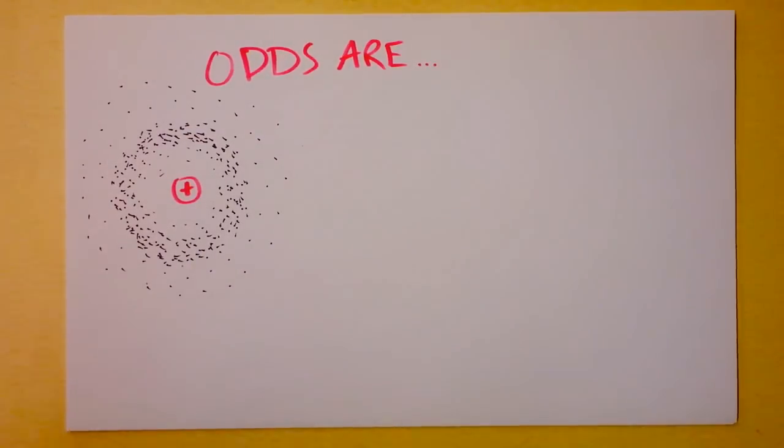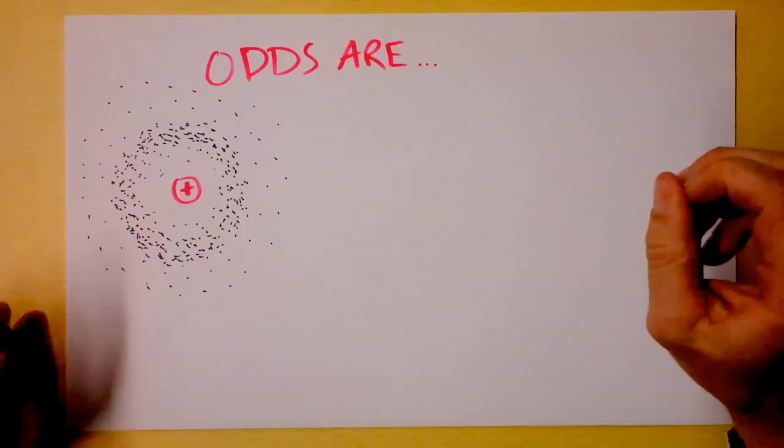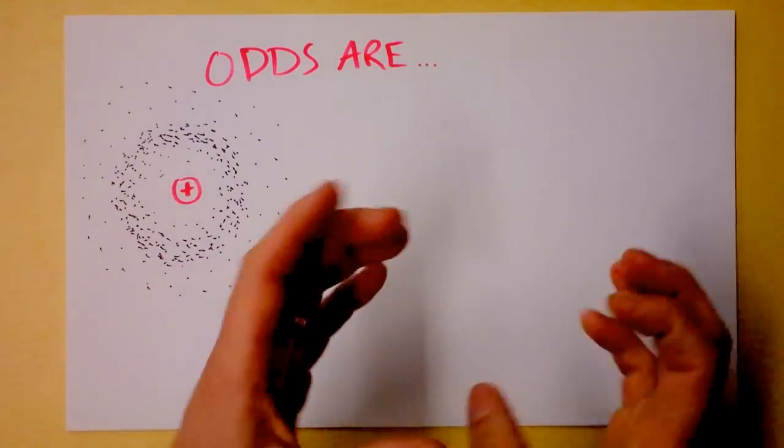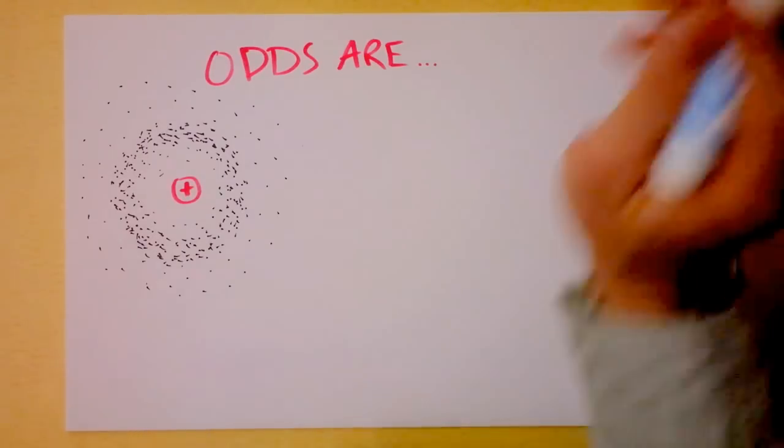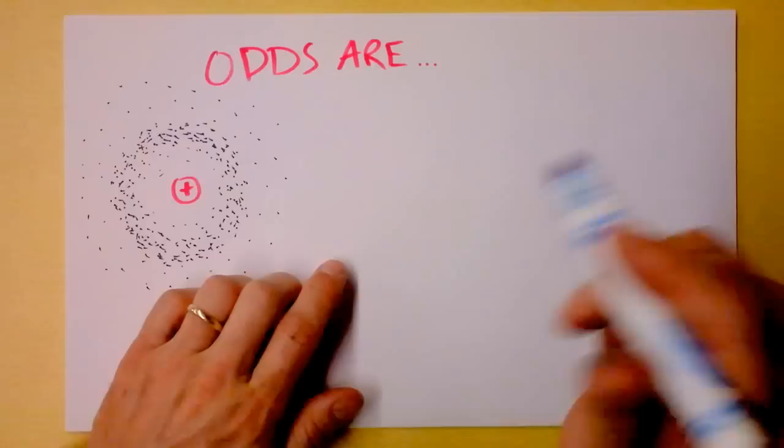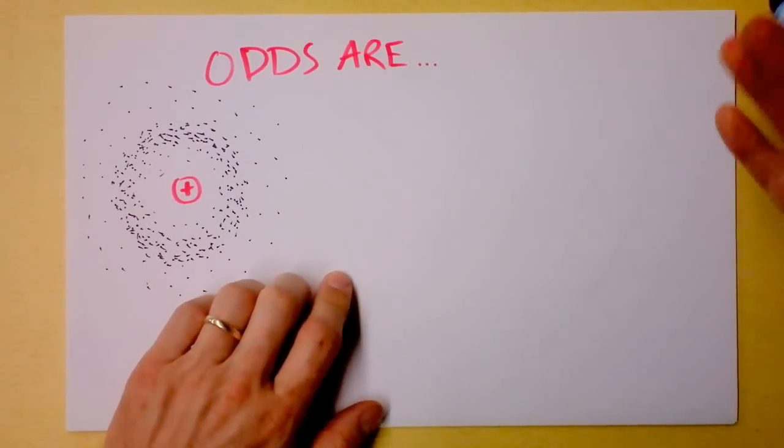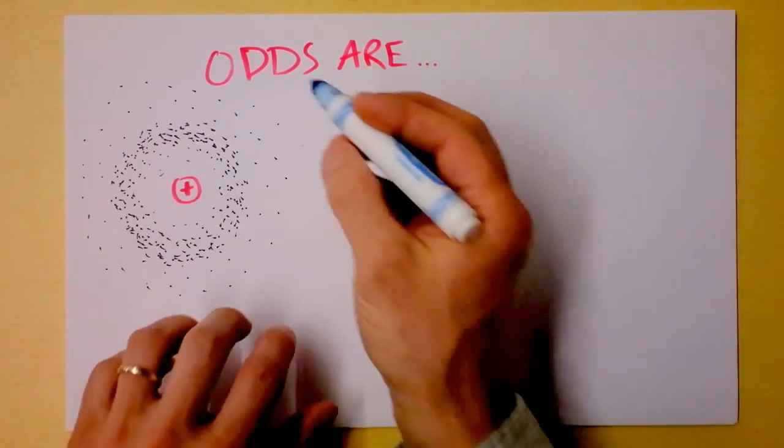So you got Bohr, right, and then you got De Broglie, and De Broglie comes in and starts explaining why there might be certain radii that are allowed and others are not. But then Schrödinger writes down an equation for how quantum things move and quantum mechanics is born.